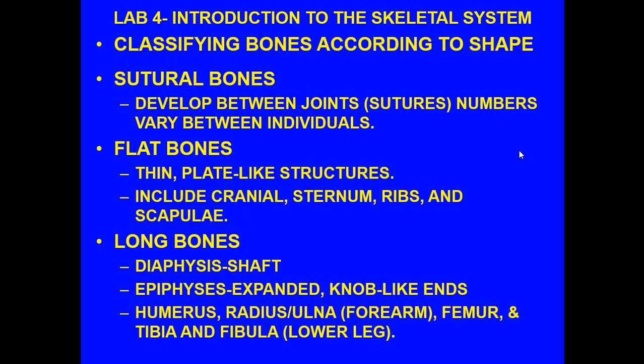When we classify bones according to shape, we have sutural bones, which develop between joints — particularly the sutures of the skull. Their numbers vary between individuals so they're not counted. Flat bones are thin, plate-like structures. Don't think of plate as flat — that's an important point. These include the cranial bones, the sternum, the ribs, and the scapula.